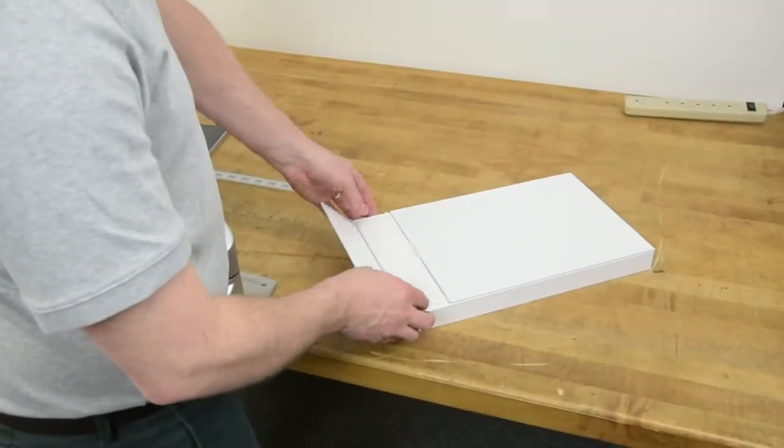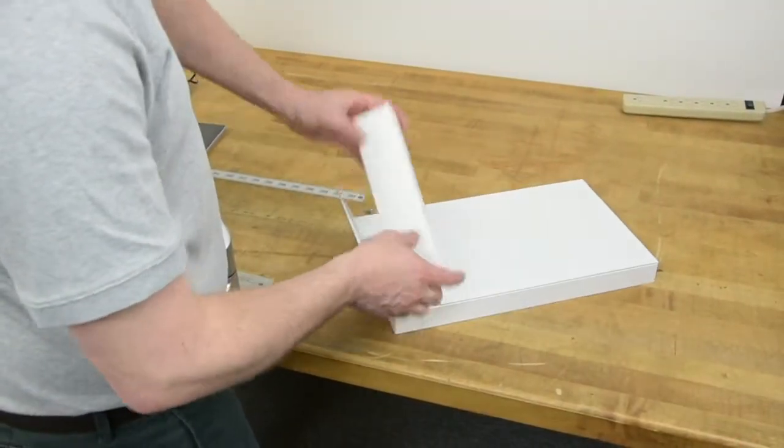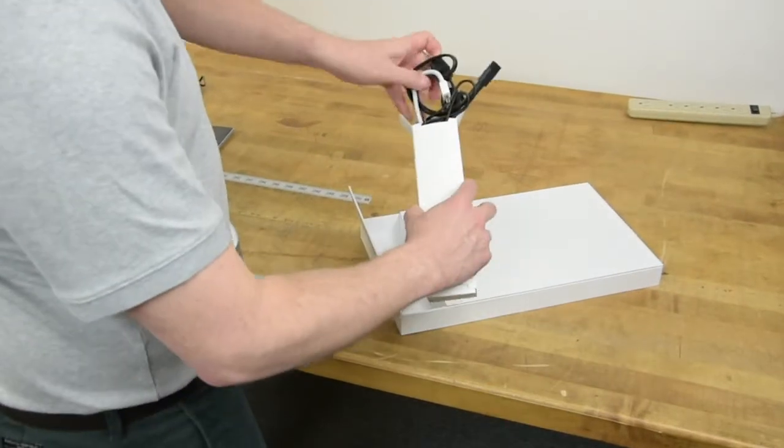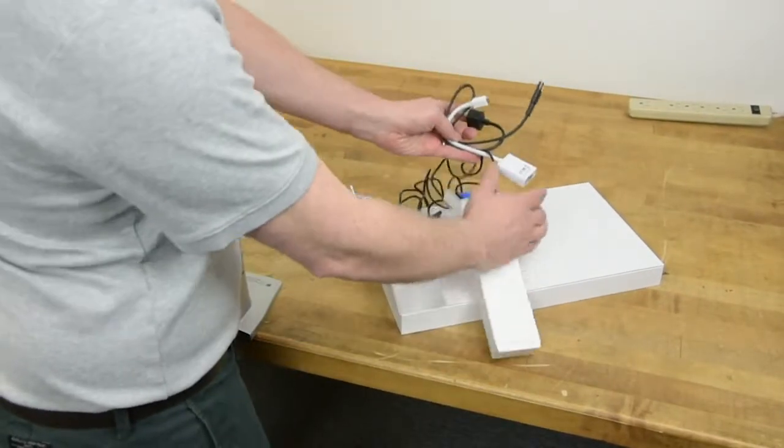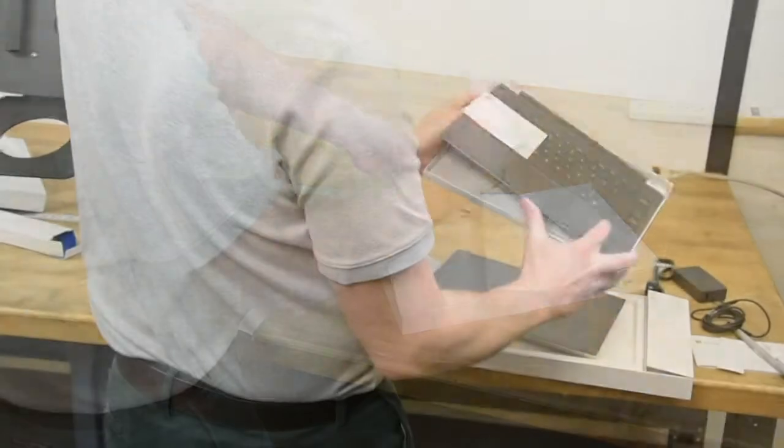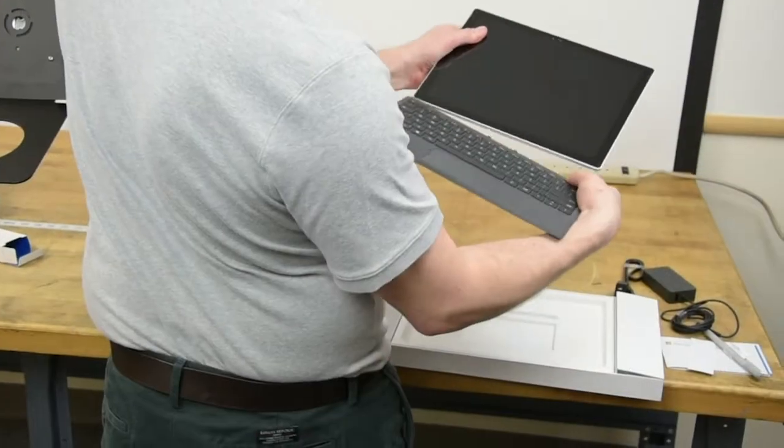Now we're going to take the power supply out of the Surface box. And also in that box, as you'll notice, Will's unpacking it. There's a white adapter that lets you use any monitor you want, giant screen, TVs, anything. Keyboard comes in a separate box, but they snap right in.